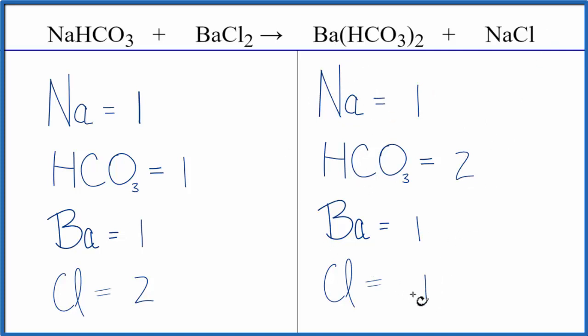So let's start by balancing our chlorine atoms. We have one here and two here. Put a coefficient of two. One times two. So the chlorine atoms, those are balanced.